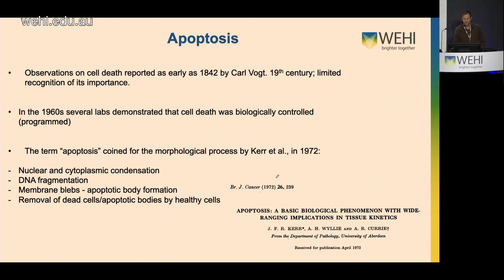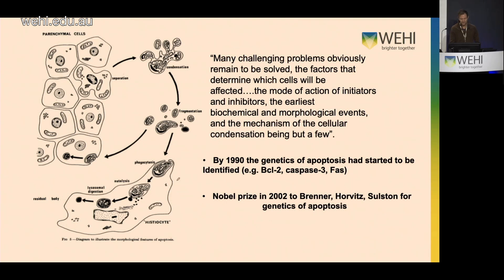In that paper, they defined the morphological process of cell death common throughout different tissues. The morphological criteria for apoptosis included nuclear and cytoplasmic condensation, DNA fragmentation, membrane blebs — now called apoptotic body formation — and the removal of these apoptotic bodies by healthy cells. This schematic from that seminal publication shows what we still describe as apoptotic cell death: condensation, fragmentation, and uptake by phagocytes to clear apoptotic bodies in an immunologically silent manner. They stated that many problems remained to be solved.